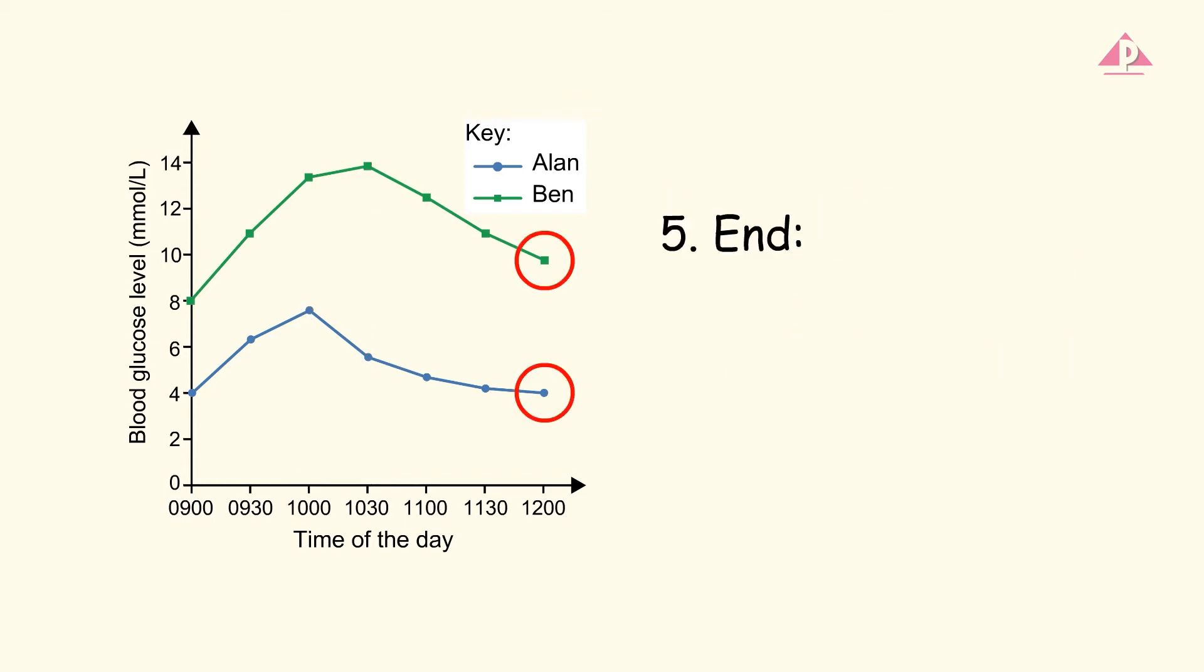Finally, compare the ending points. Ben's blood glucose level was higher at the end and did not return to its original level as Alan's did.